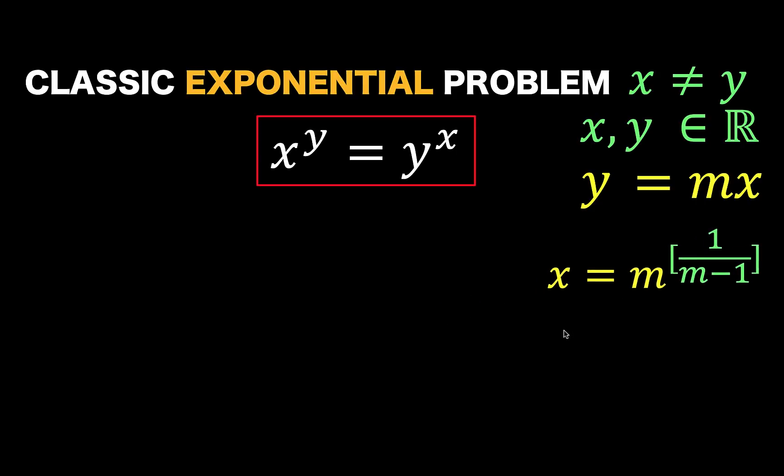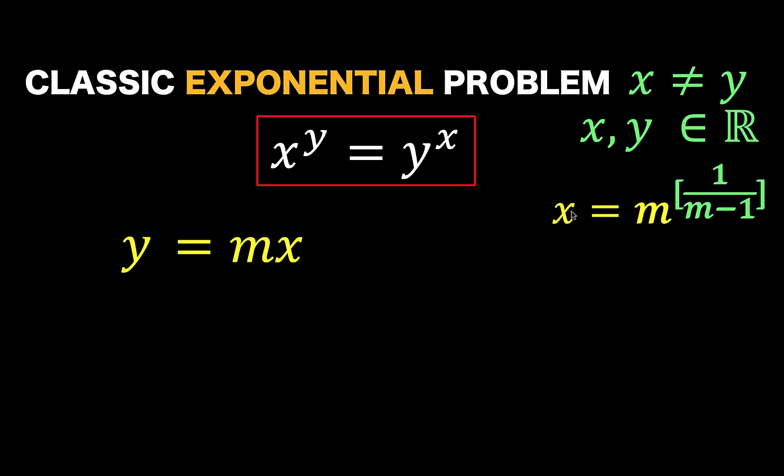x is now equal to m raised to 1 over m minus 1, where m is a certain constant. We are going to revisit this later on. Let's go back to this equation, y equals mx. You have here the variable x, but we already have this explicit result for x.